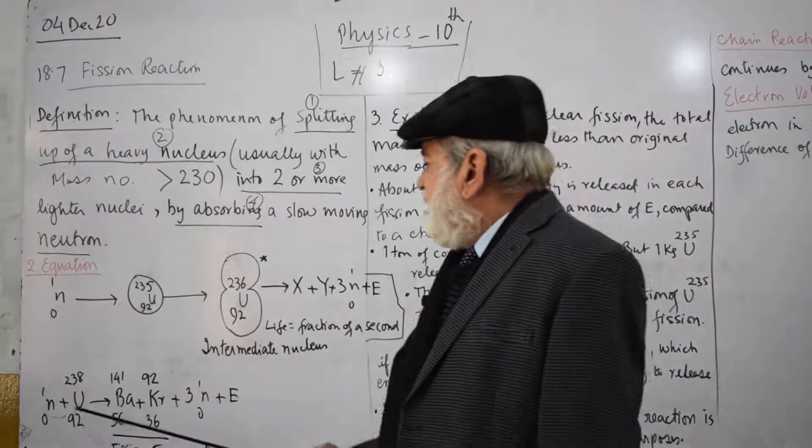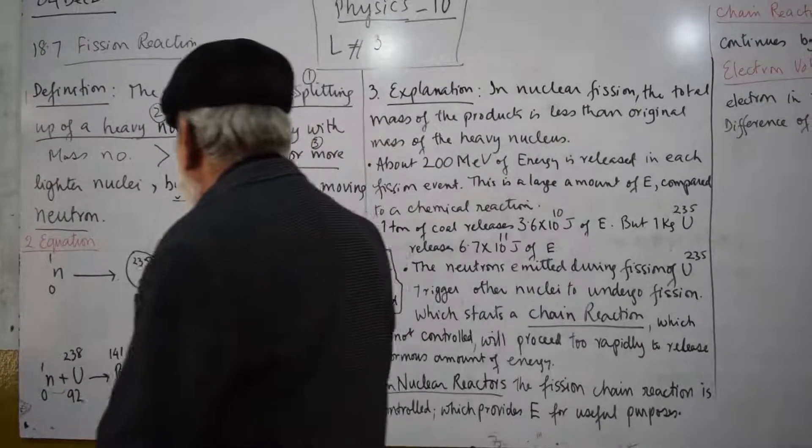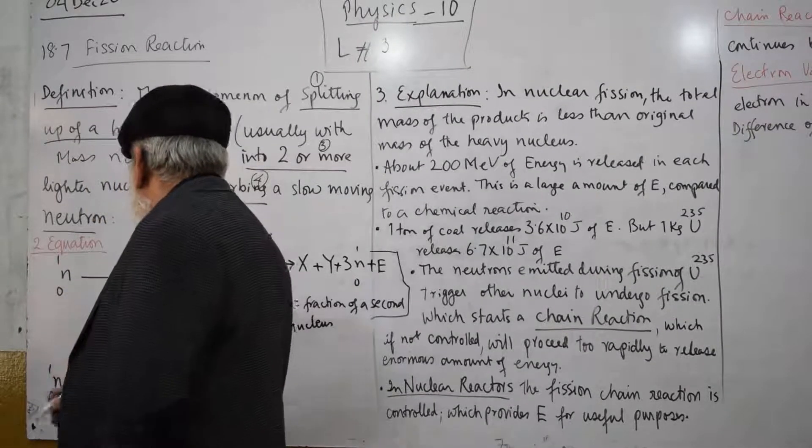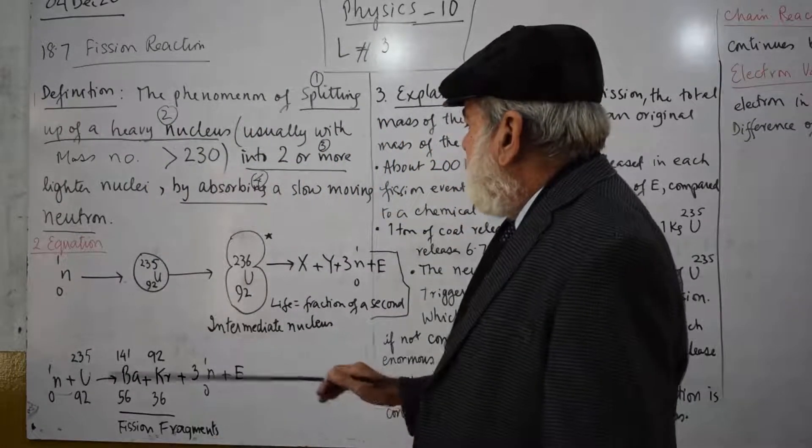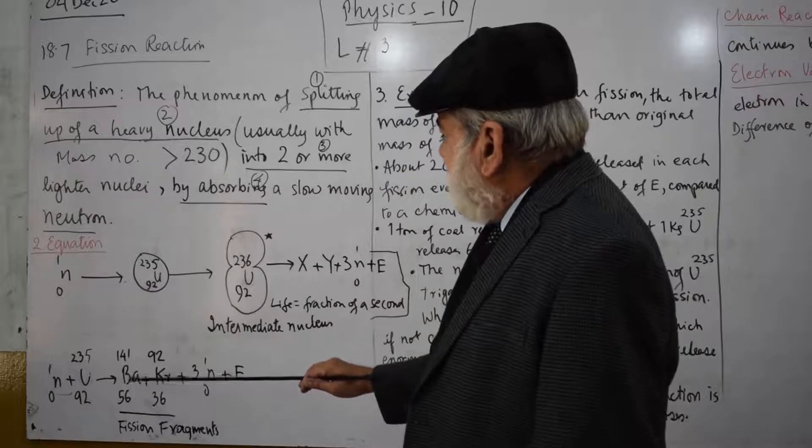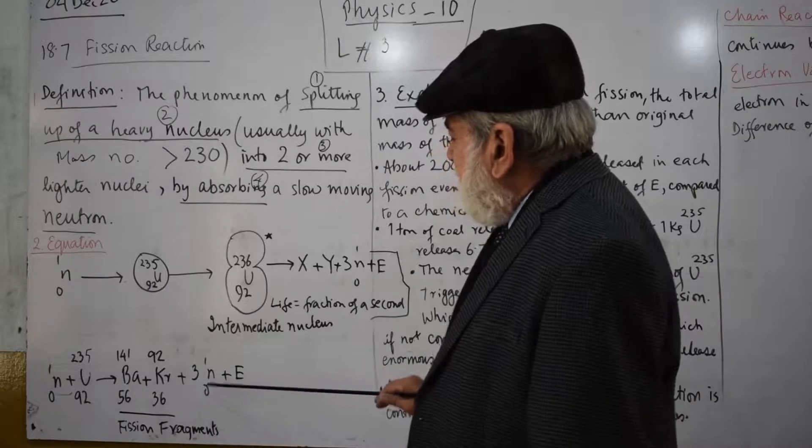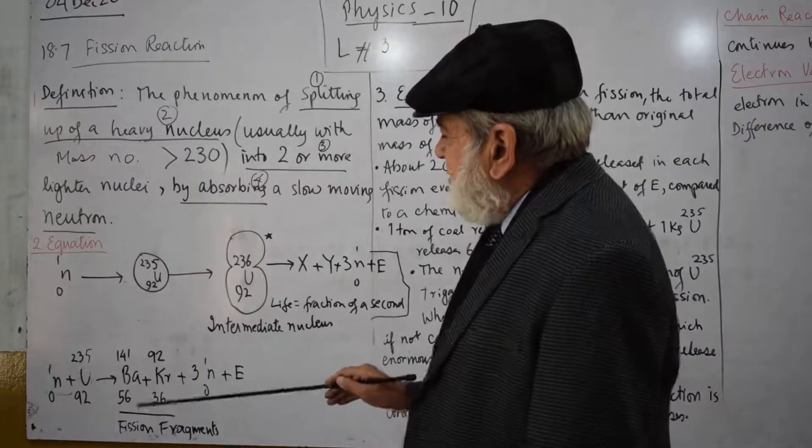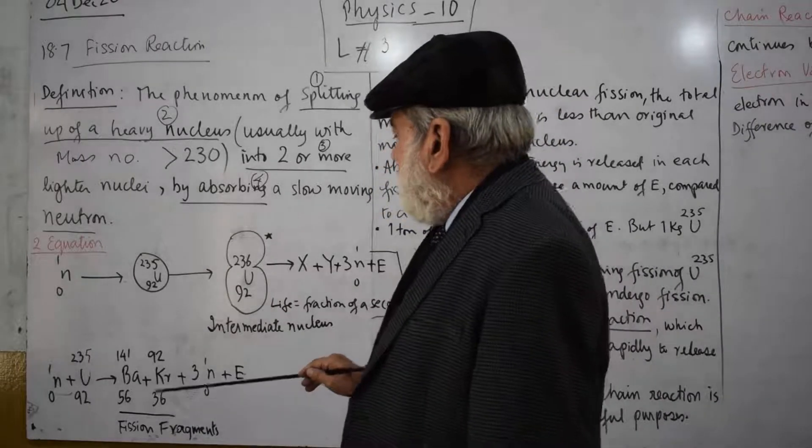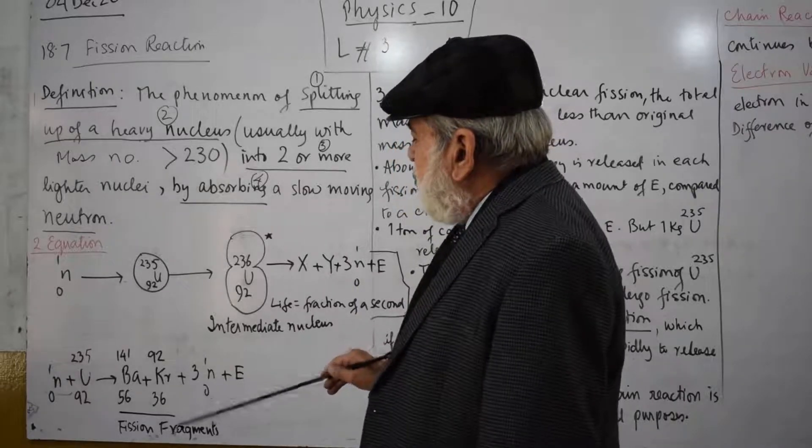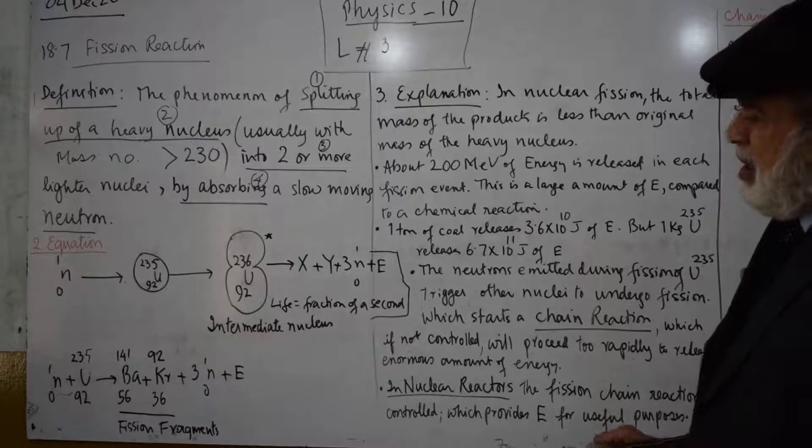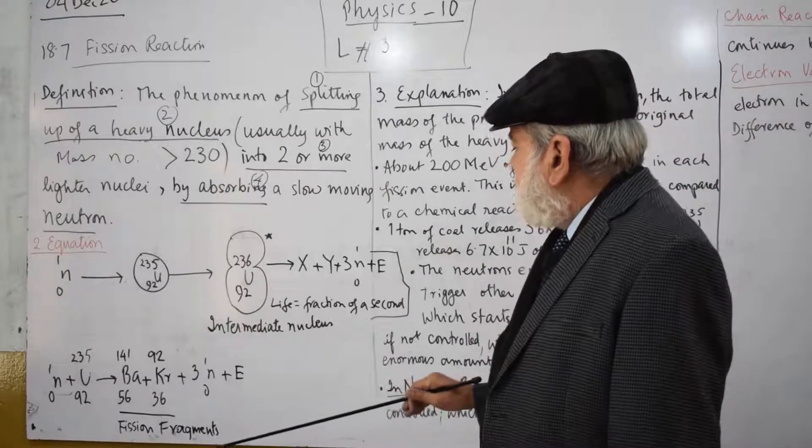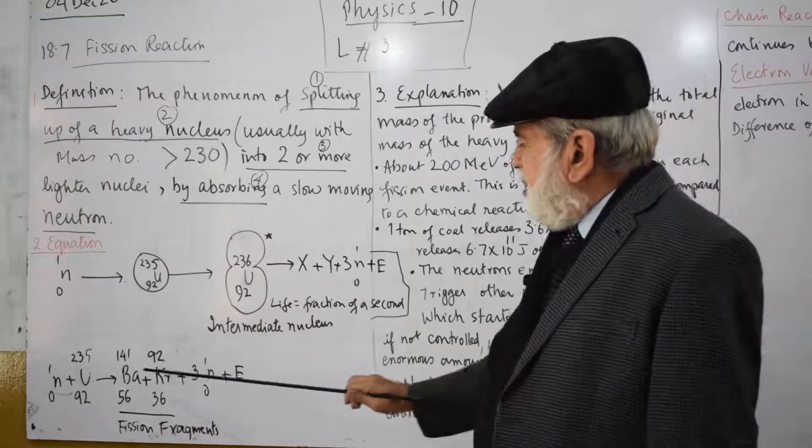Here we go. Uranium-235 plus one neutron gives Uranium-236, which splits up into Barium-141 and Krypton-92 plus three neutrons are released plus energy. These two, Barium and Krypton, are known as fission fragments. These are the daughter nuclei, Barium and Krypton.